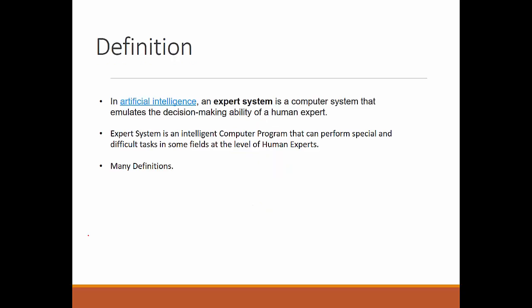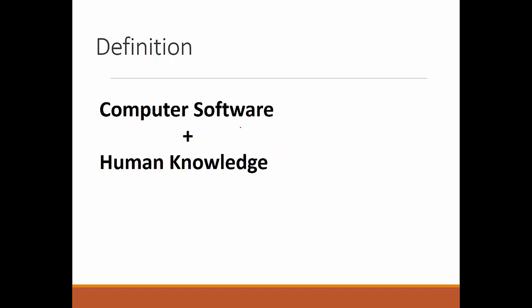So let's discuss what's an expert system. If you try to define expert systems, you will have different people coming up with different definitions. Here I have got two definitions. According to one, an expert system in artificial intelligence is a computer system that emulates the decision-making ability of a human expert. Another definition goes: expert system is an intelligent computer program that can perform special and difficult tasks in some fields at the level of human experts. So you have human expertise in some sort of field or subject and we have computers or computer programs involved. In all these definitions you will find two common things: one is computer system, another is human knowledge.